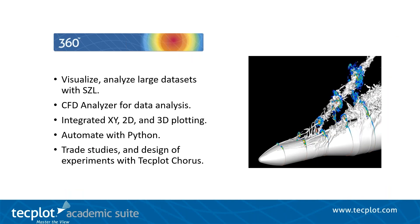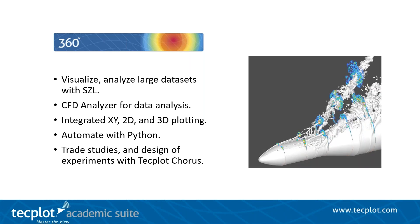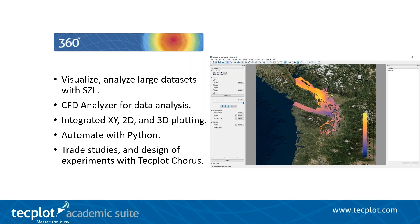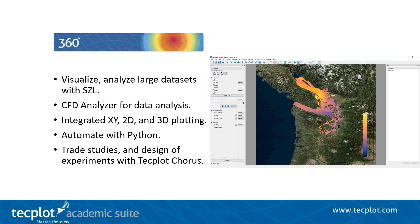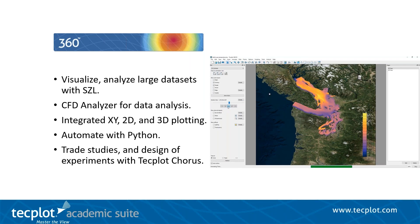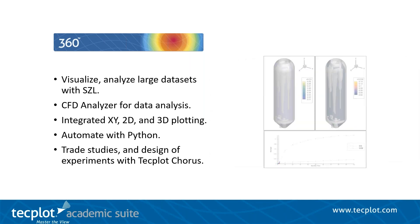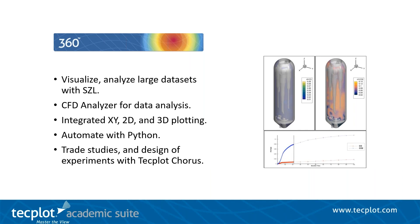TechPlot 360 has been our flagship software for years and has long been trusted as a multi-purpose post-processor by engineers and scientists to remove any doubt in their designs or analyses by providing clear visualization of their complex data. TechPlot 360 can efficiently handle large billion-cell data sets to visualize simulated or experimental data from multiple industry standard data formats and our own proprietary data format, SZL, or sub-zone load-on-demand. SZL format divides large volume zones into smaller sub-zones that are not loaded until a plot element demands it, resulting in reduced memory usage and faster manipulation of the data.